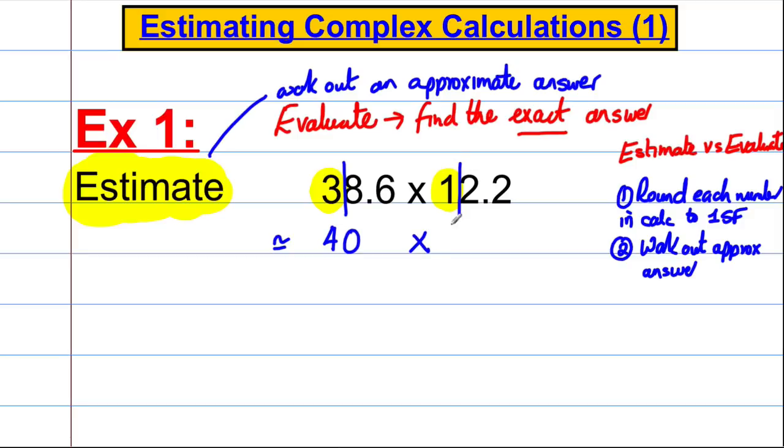it's 40. And we multiply that by the nearest 10 to 12.2, which is clearly 10. And 40 multiplied by 10, you should know, is equal to 400. Okay,